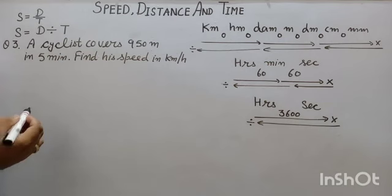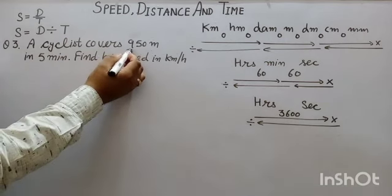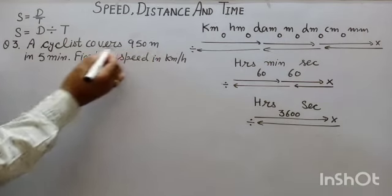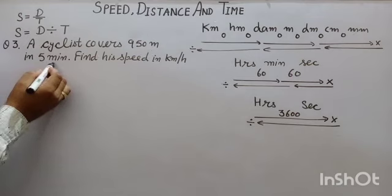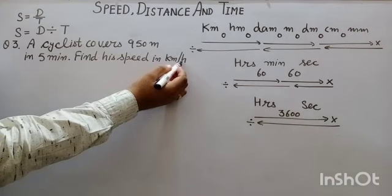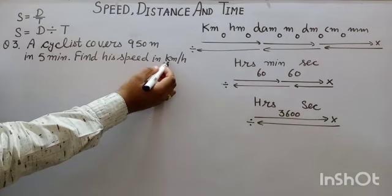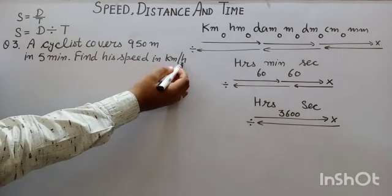Try to understand. Here, distance is given in meters and time is given in minutes. And we have to find speed in km per hour. Means our distance should be in km and time should be in hours.